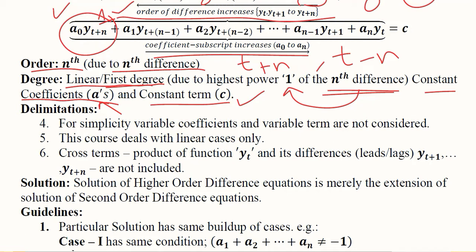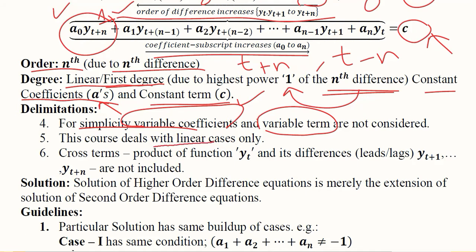For simplicity, we are not assuming variable coefficients or variable terms. We are considering constant coefficients and a constant term — that is a1, a2, up to an, and c. We are dealing with linear cases in this course, not non-linear. We are also not considering cross terms, meaning the terms of yt are not being multiplied with yt+1, yt-1, or any other lag or lead.